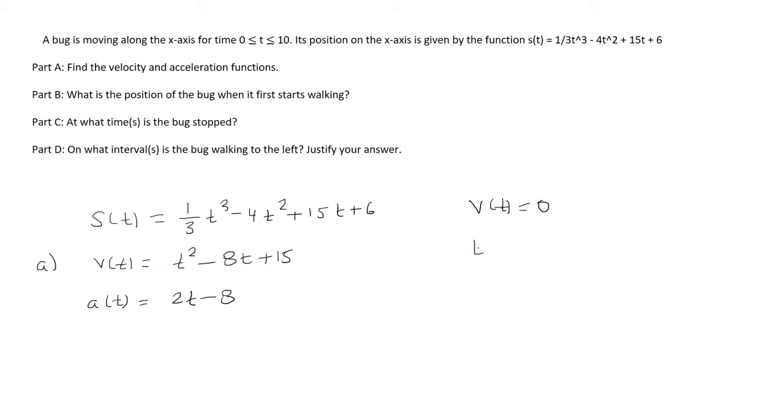Okay, so let's set t squared minus 8t plus 15 equal to 0. We're going to factor this into (t minus 5)(t minus 3). And so we get that t is 5 and 3.